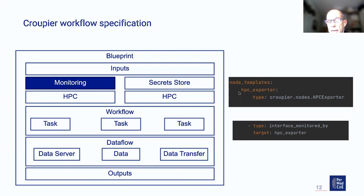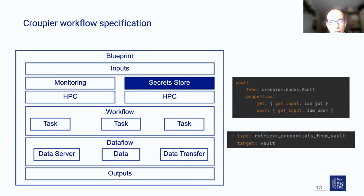We can select whether we are going to use monitoring — in that case, we just need to add this node in the node template section, nothing else. But when we are describing an HPC infrastructure, we have to provide a relationship that connects that infrastructure with the monitoring, and we have to do this for every infrastructure for which we want to monitor the job and queue runtime behavior. The same for secret store — we just need to provide the node for hosting the user secrets and credentials in Vault, and connect the infrastructure with this secret store to retrieve the user credentials from it.